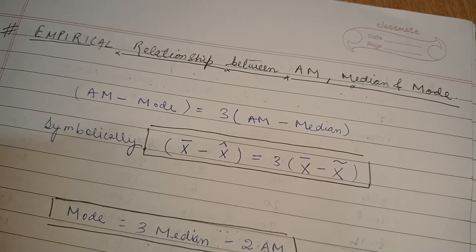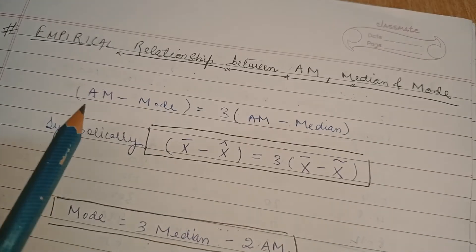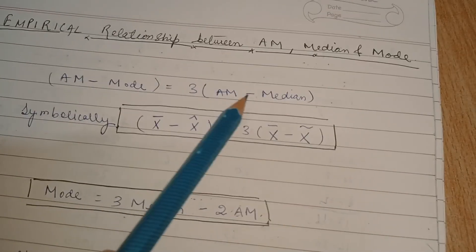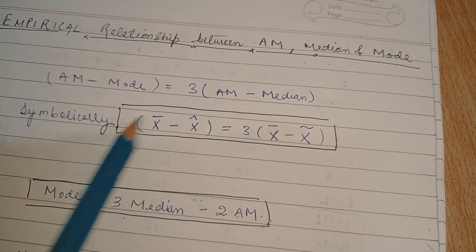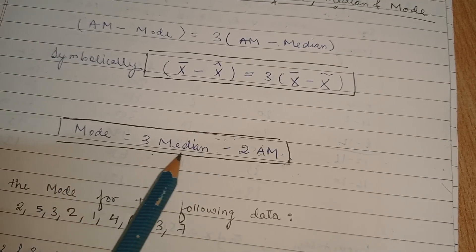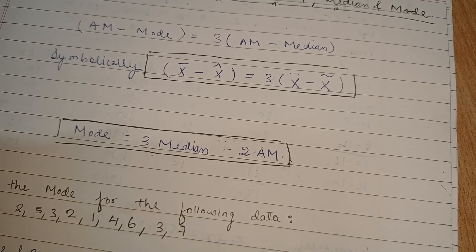Now there is a very important relationship which is called an empirical relationship between arithmetic mean, median, and mode. Arithmetic mean or simply mean minus mode equals 3 into arithmetic mean minus median. Symbolically, mode equals 3 median minus 2 arithmetic mean. Let us see a problem on it.